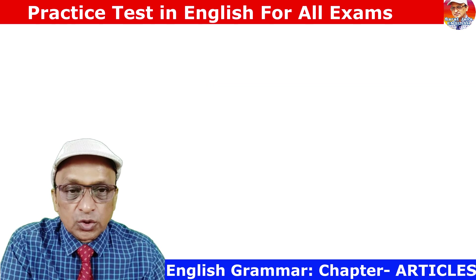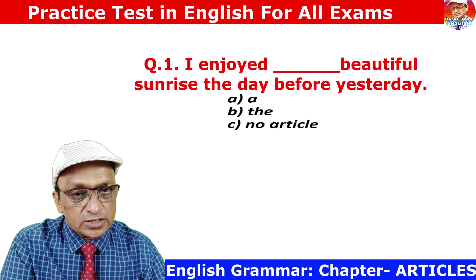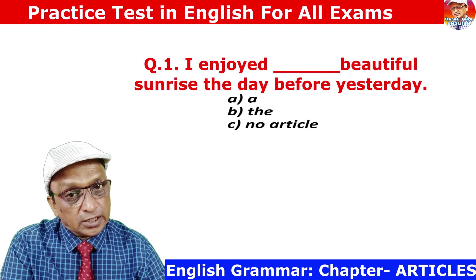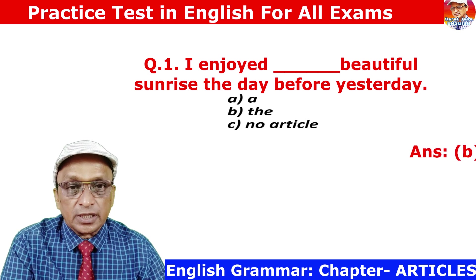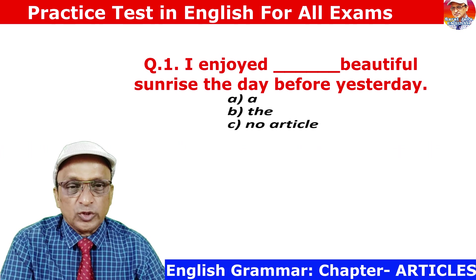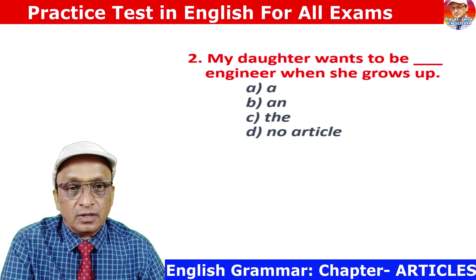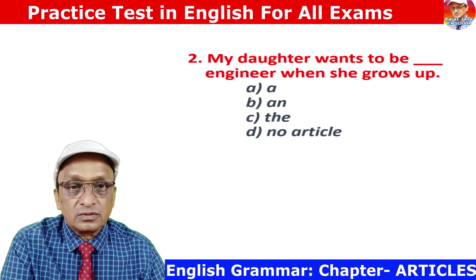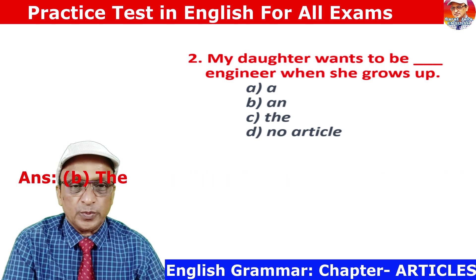Question 1: I enjoyed the beautiful sunrise the day before yesterday. Particularization of the sunrise means article THE is to be used. Answer is B. Question 2: My doctor wants to be an engineer. 'Engineer' gives a vowel sound, that is why 'an engineer.' Answer is B.